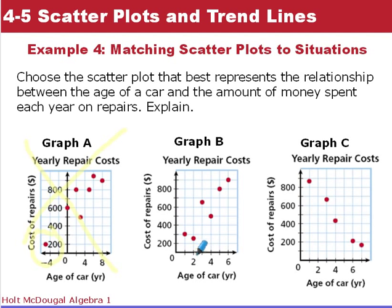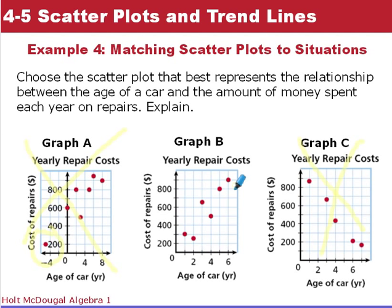We're down to graphs B and C. Graph B tells us that when the car is two years old it had $300 in repairs, then went down to about $250, then bounced up, down, and up again. Graph B shows positive values and a positive correlation, so it could represent the situation. Looking at graph C, it shows a negative correlation — as the car ages, money spent decreases. Since we expect more money spent on repairs as cars age, we can eliminate C. The correct graph is B.